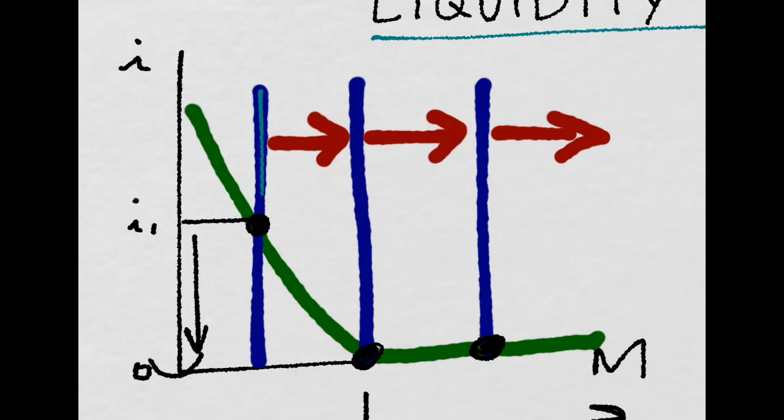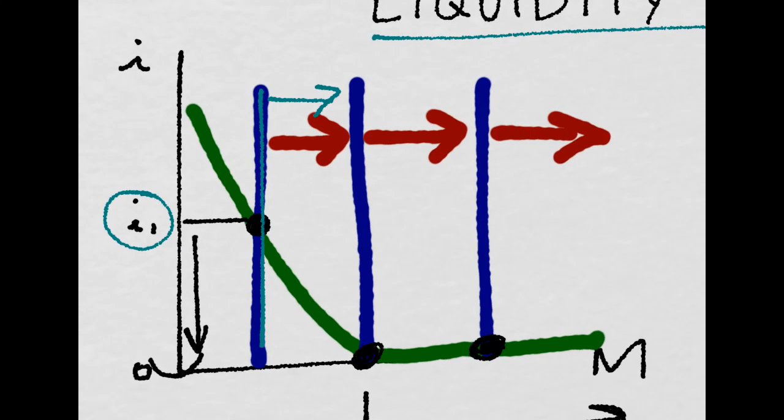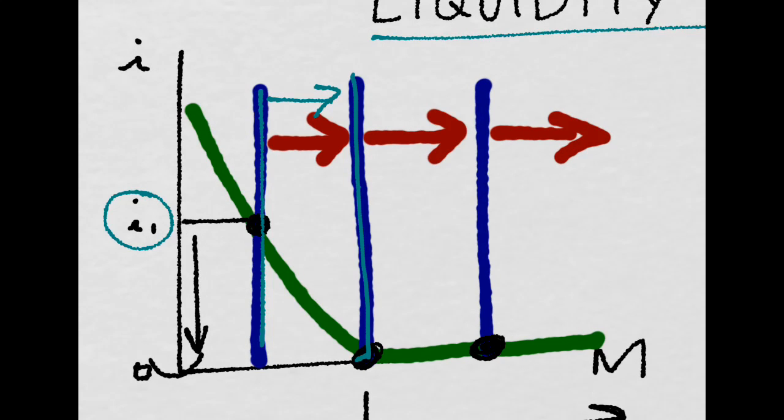We are right here. This is the money supply, and the government, for whatever reason, decides that this interest rate is too high, and it increases the money supply in order to decrease the interest rate. And now imagine that it increases that money supply up to the point where the interest rate is actually zero.